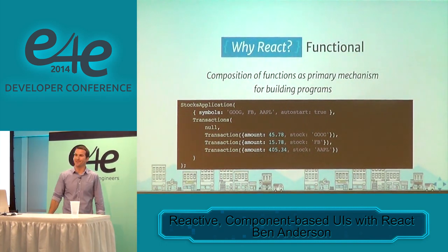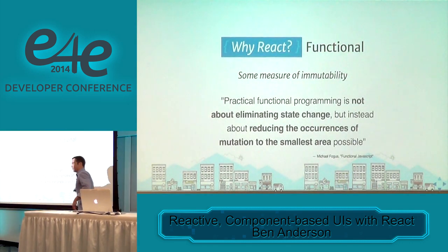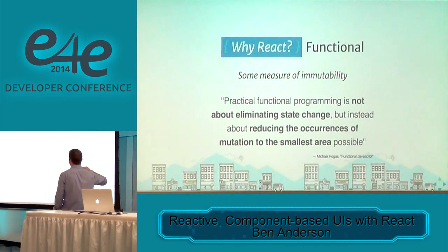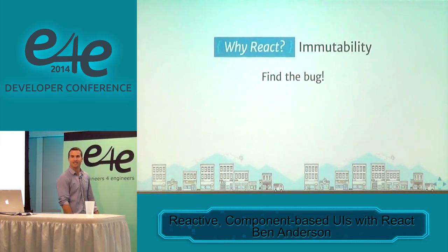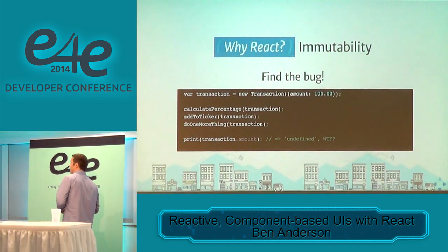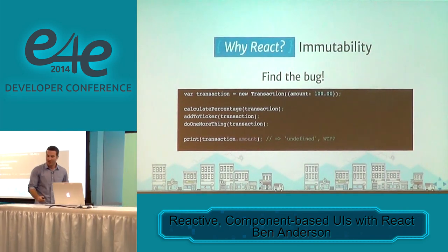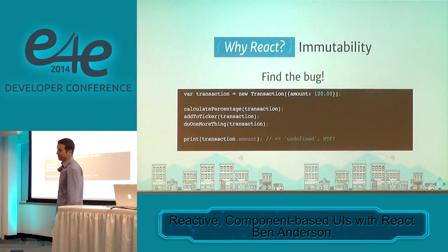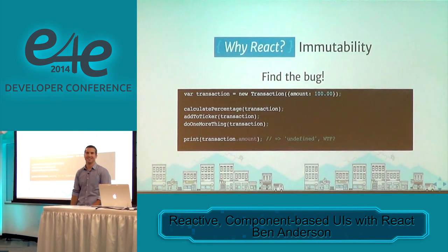Some measure of immutability — but why does that matter? This is a quote from Functional JavaScript by Michael Fogus. Practical functional programming is not about eliminating state change, but about reducing the occurrences of mutation to the smallest area possible. Let's play a game: find the bug. We create a transaction object with an amount of $100, then do some things: calculate the percentage, add it to the ticker, one more thing — there could be 100 things. Then we want to print out the transaction amount, but on a Monday morning this is printing out undefined. Where's the bug? One of those three functions. Which one? You don't know.